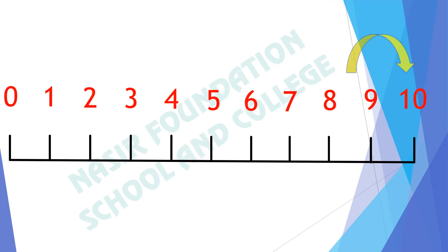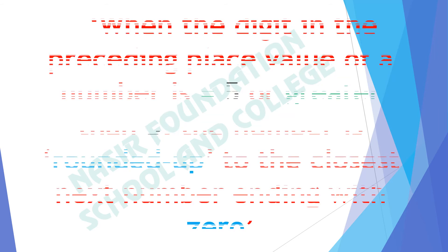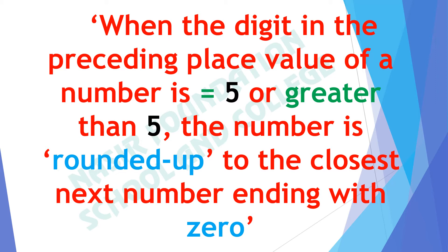When we round off 8, we can see that it is nearer to 10 and not 0. Therefore, 8 is approximately equal to 10. Numbers nearer to 10 are 6, 7, 8, and 9. For rounding off 5: when the digit in the unit place is equal to 5 or greater than 5, the number is rounded up to the closest next number ending with 0.